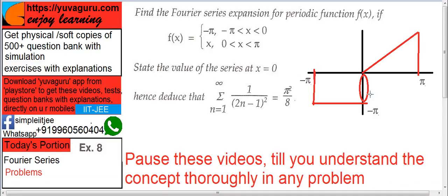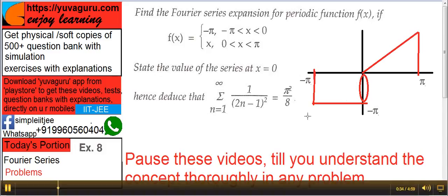But what happens at 0? At 0, there are two values. So this function is discontinuous at 0. So we'll have to take the mean of the two values when we come to 0. Let's solve that when it comes.